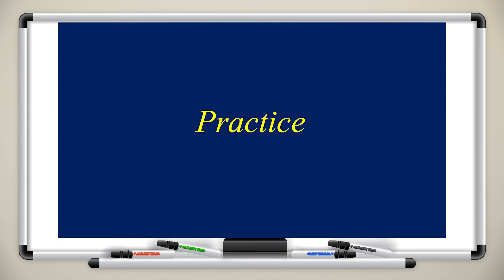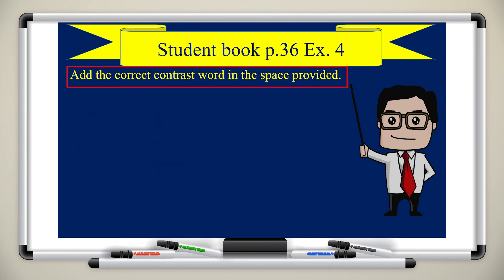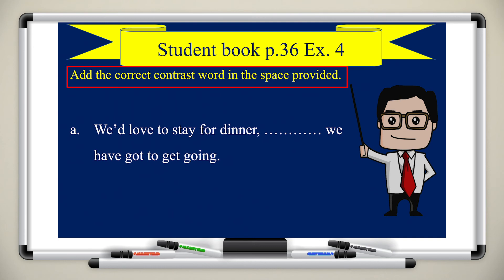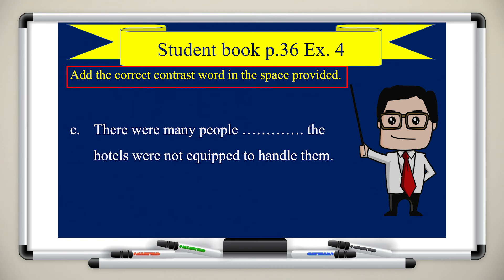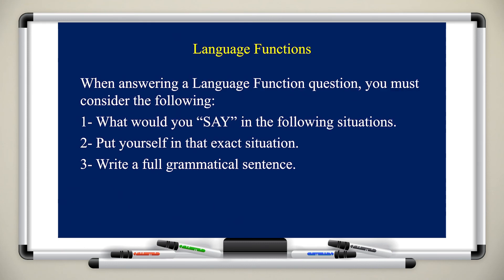Let's practice from student book page 36, exercise four: add the correct contrast word. Sentence one: 'We would love to stay for dinner, ___ we have to get going' — the answer is 'but.' Sentence two: 'They decided to stay in the area ___ their problems with the local residents' — the answer is 'in spite of.' Sentence three: 'There were many people ___ the hotels were not equipped to handle them' — the answer is 'although.'